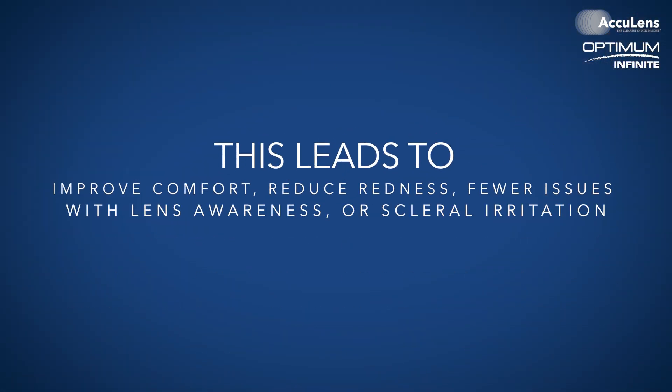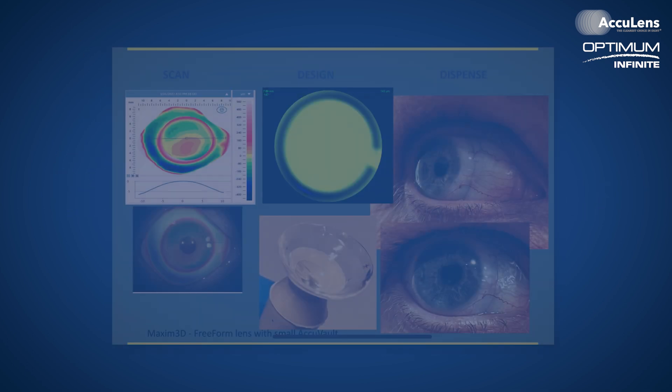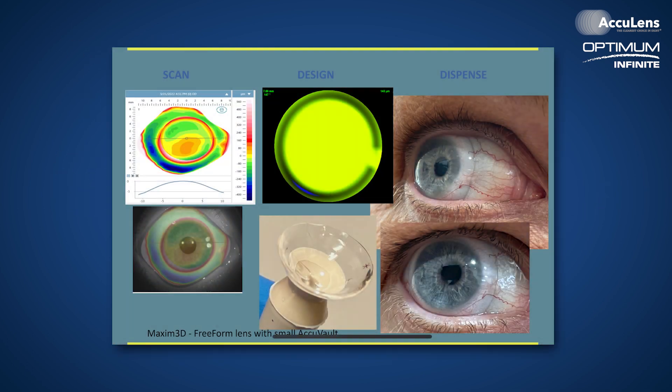The result is a lens that maintains proper central corneal vaulting and limbal clearance, while also contouring the sclera even around elevated anatomical features. This leads to improved comfort, reduced redness, and fewer issues with lens awareness or scleral irritation. AccuVault is just one of the many customizations that makes scleral lenses such a versatile and powerful tool for managing complex ocular surfaces.